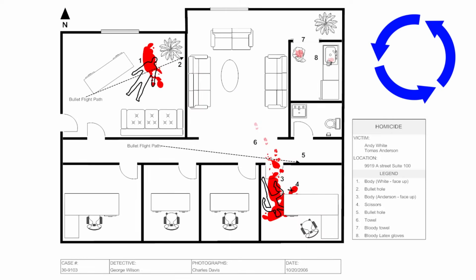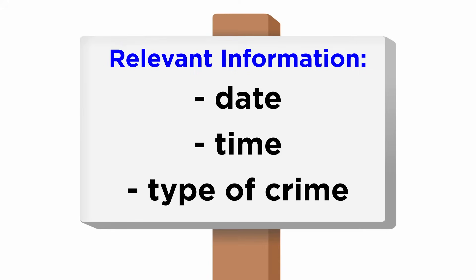It is one continuous and uninterrupted video until all the points of entry, diverging pathways, and points of exit are completely covered, along with the location of evidence. Videography begins with a close-up shot of a placard on the screen. This placard includes information related to the scene, such as the date, time, and type of crime. The process and precautions to be followed are similar to photography.